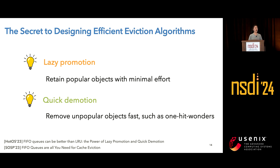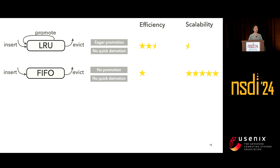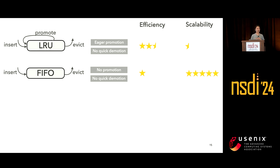Most algorithms don't have these properties. LRU and FIFO are two simple eviction algorithms widely adopted in production systems, and both of them lack lazy promotion and quick demotion. LRU promotes an object every time there is a cache hit, and FIFO doesn't do any promotion at all. Therefore, FIFO has very good scalability but very poor efficiency, while LRU has much better efficiency but very poor scalability.